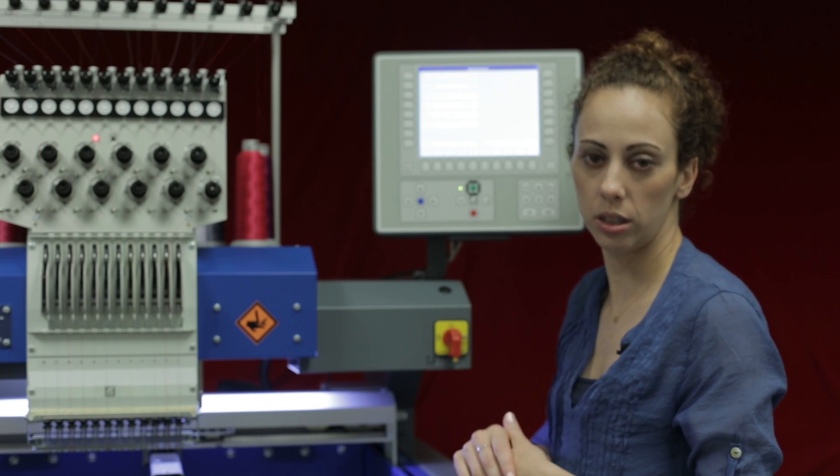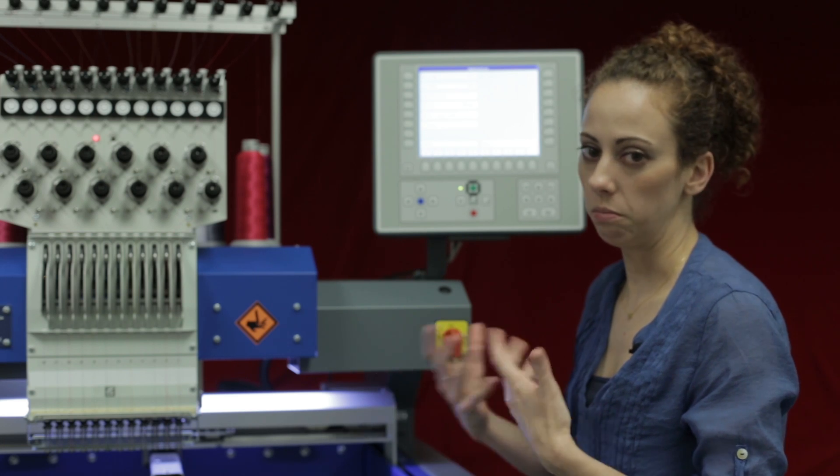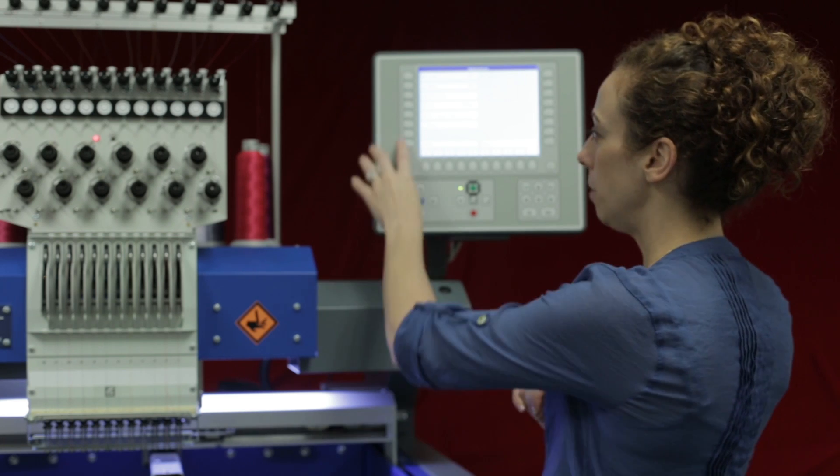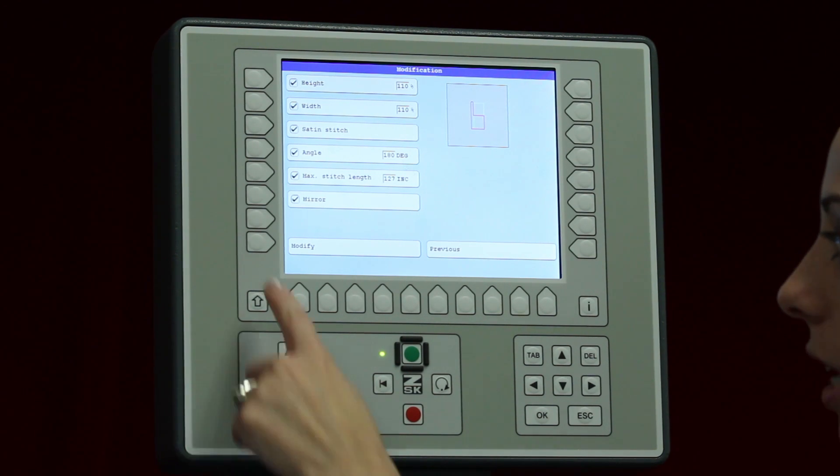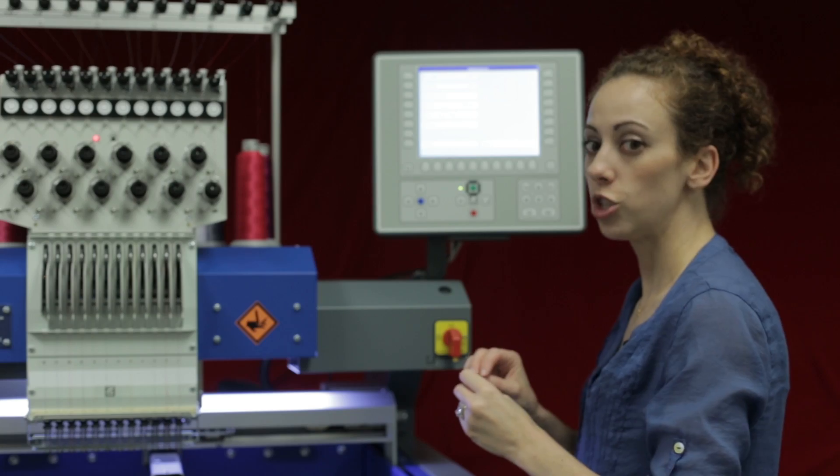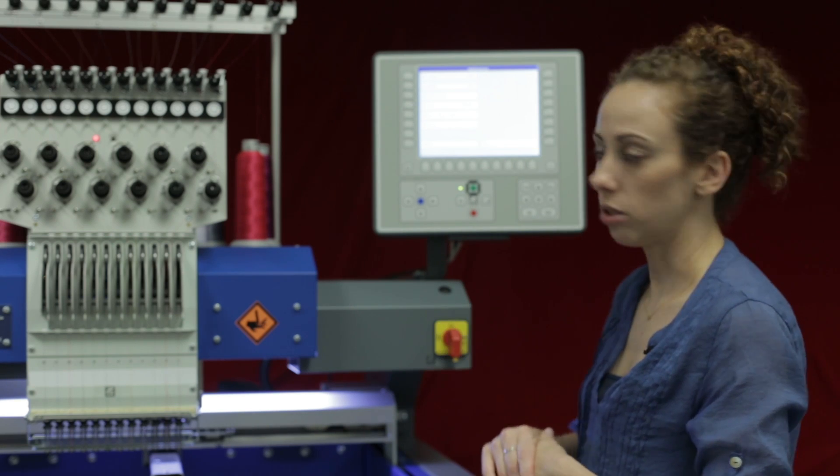And the maximum stitch length I can change that. Typically we leave it at about 12.7 millimeters. If you do want to lower it you can change that. The mirroring, if you'd like to mirror your design, you can certainly do that just by selecting it. Now if I hit modify that will keep all those changes. If I hit the previous button again it will cancel these changes out.